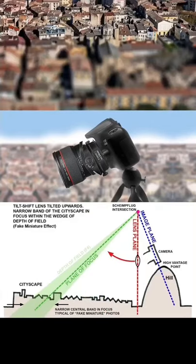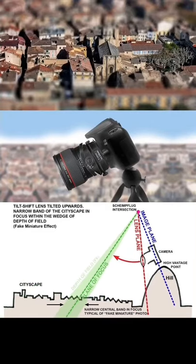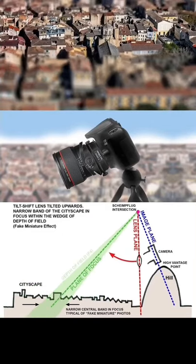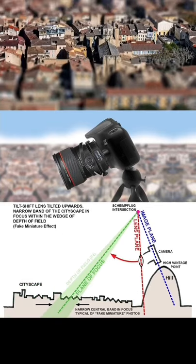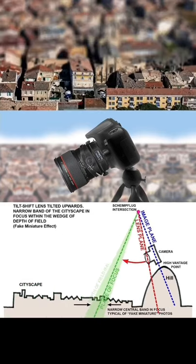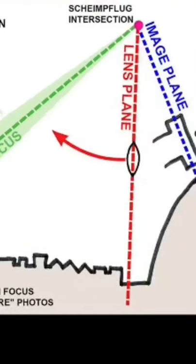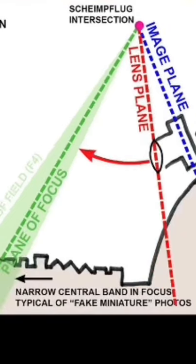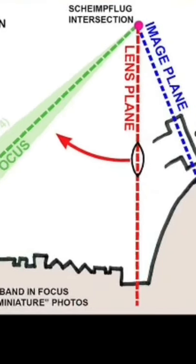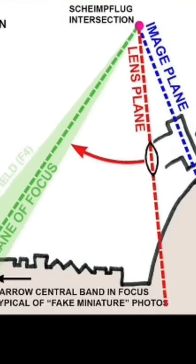This is a visual aid to help you understand what is happening when you create a fake miniature with a tilt-shift lens. When you tilt the lens upwards, the plane of focus begins to rotate about an imaginary point called the Scheimflug intersection.